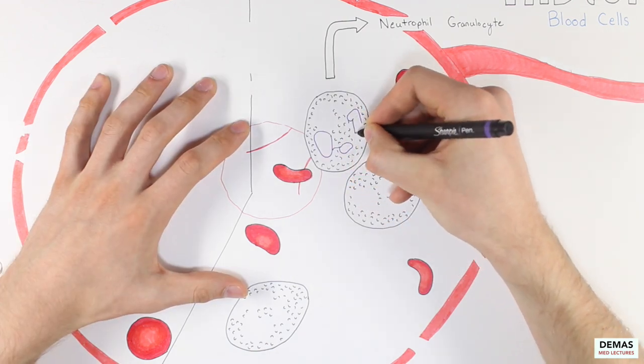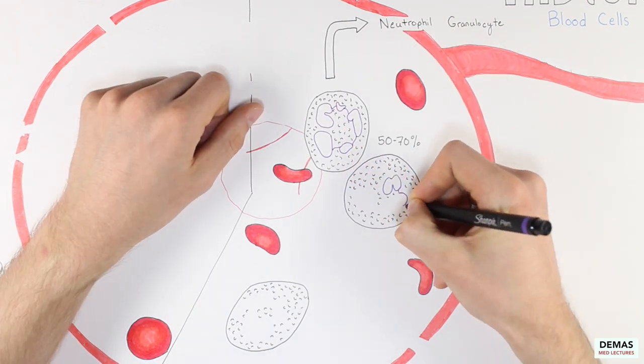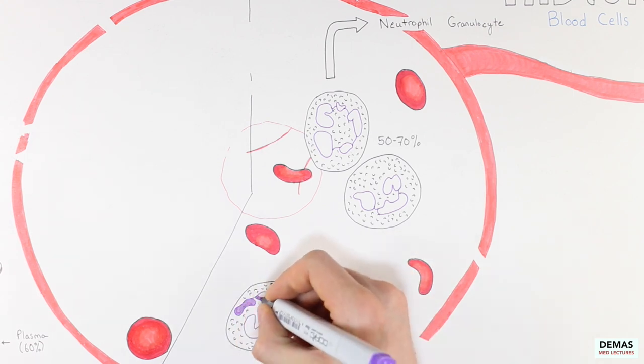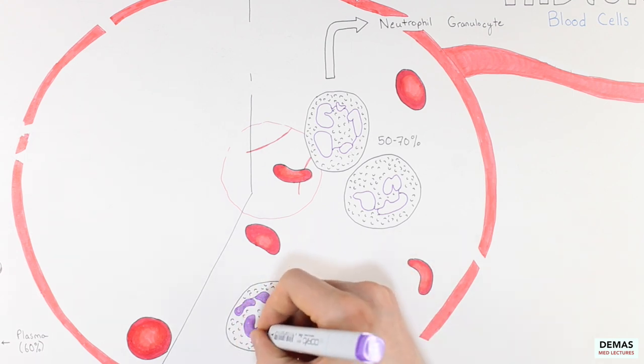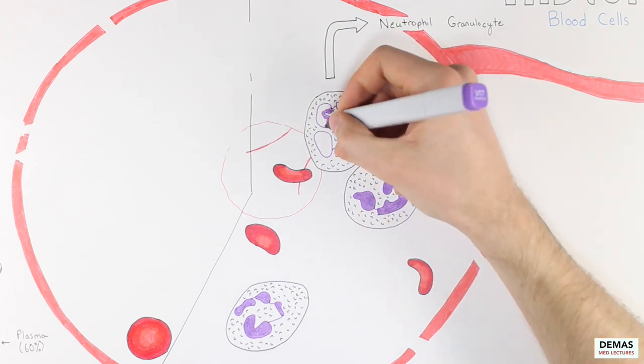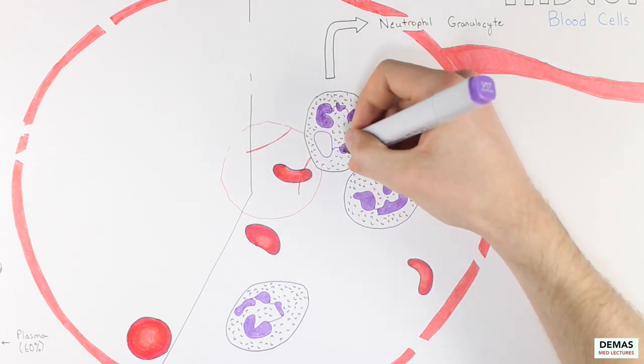Neutrophils also have a deep purple staining nucleus which forms a lobe structure. The number of lobes that the nucleus has is variable and can range between 3-5 lobes for a normal neutrophil. I have added 3 neutrophils with differing number of lobes to emphasize this range in number of lobes.